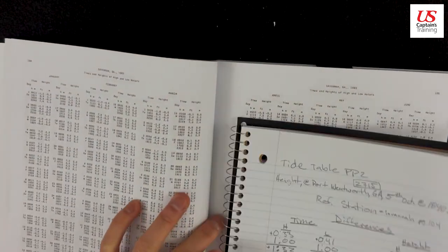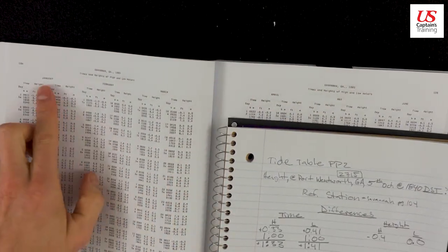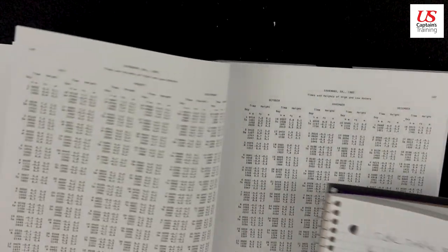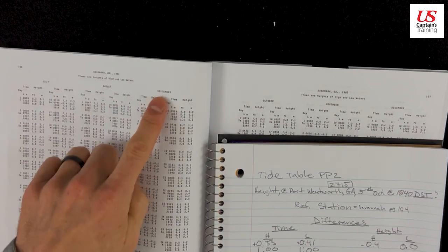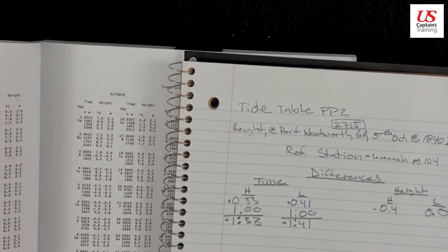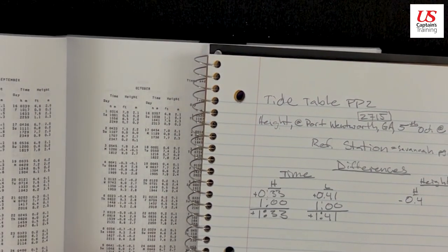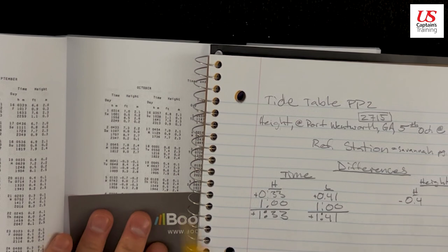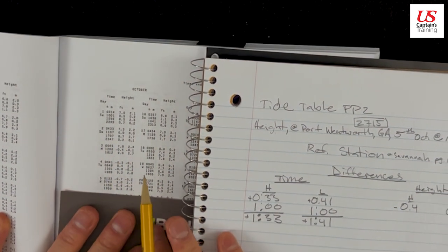104. And we need October. So here, January, February, March, April, May, June, July, August, September, October. So October 5th.